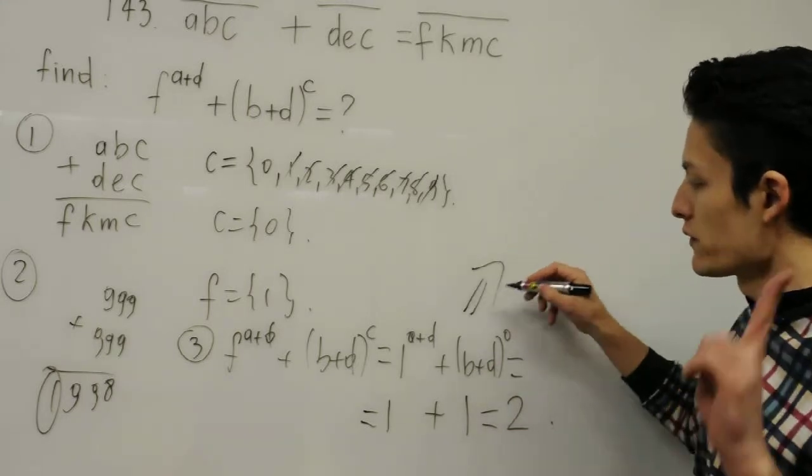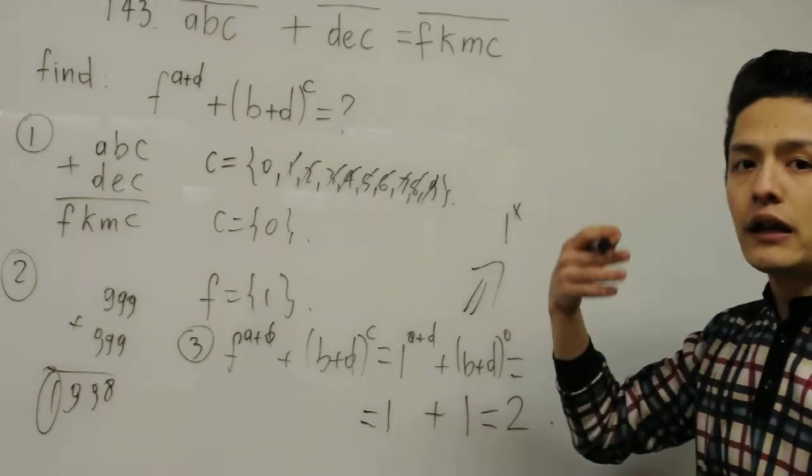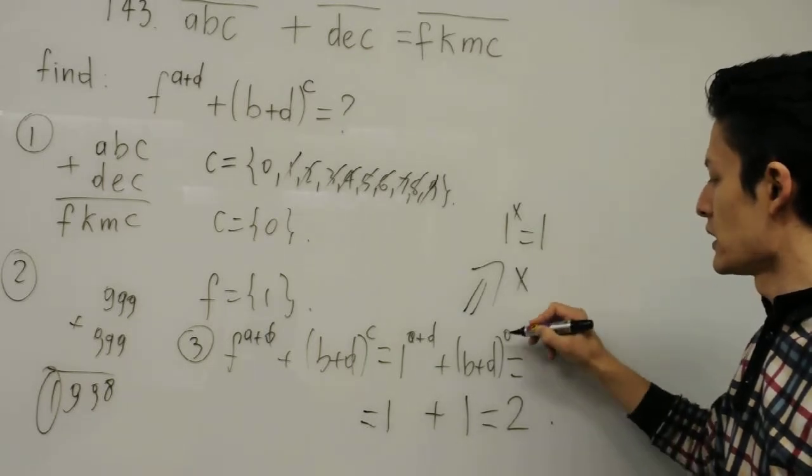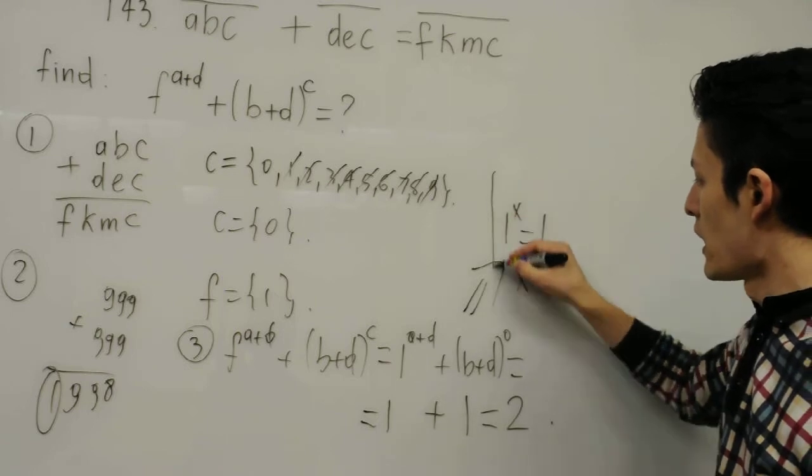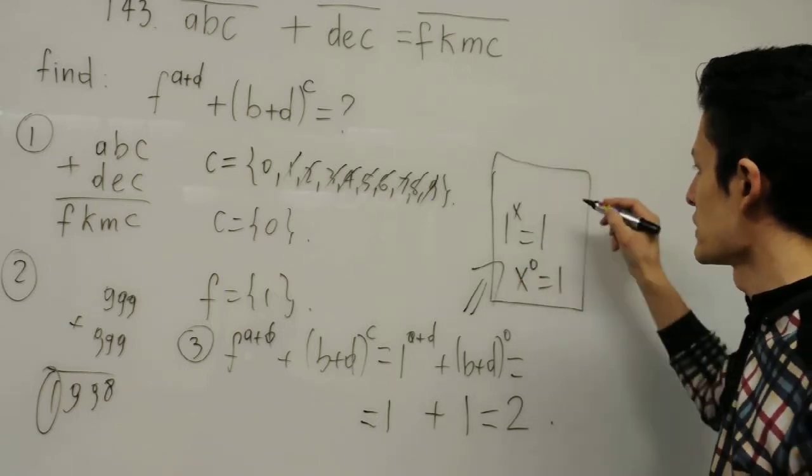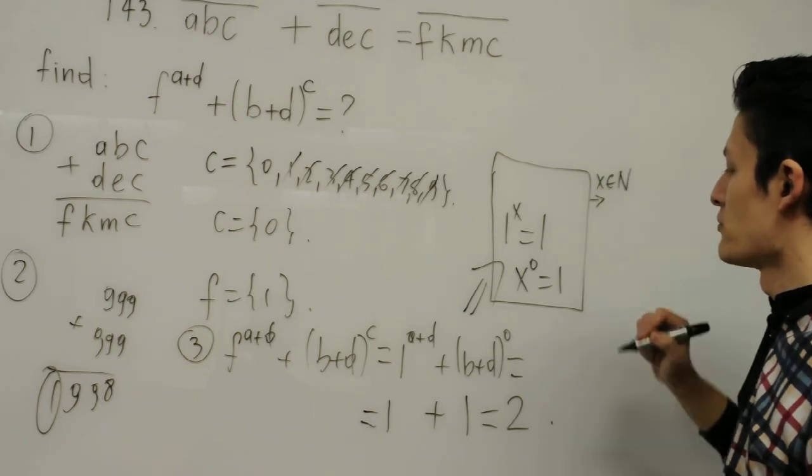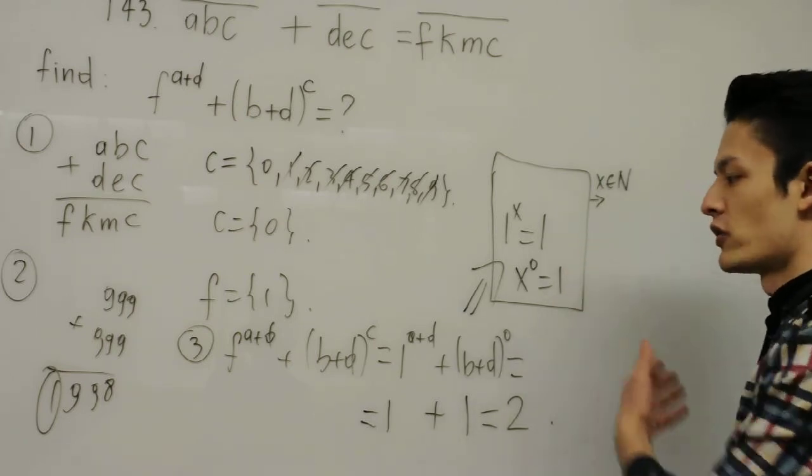But here, I use the two formulas. 1 to the X, any number, is equal to 1. And here, X to the 0 is equal to 1. I use these two formulas. And in here, X is a natural number. So by using these formulas, we got the answer.